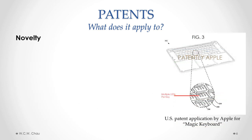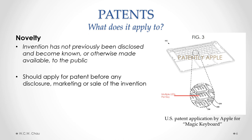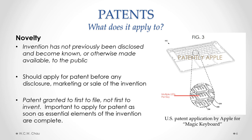The second requirement for patentability is novelty, which means that the invention has not previously been disclosed, become known, or otherwise made available to the public. If you've created an invention, you should apply for the patent before disclosing, marketing, or doing any sale of the invention. Since a patent is granted to the first person to file — not the first person to invent — it's very important to apply as soon as possible once the essential elements of the invention are complete.